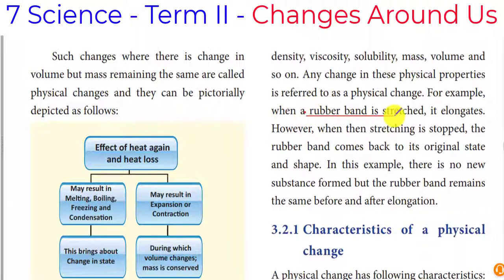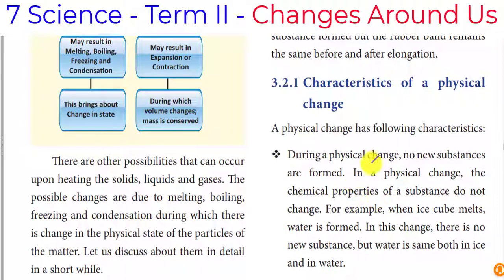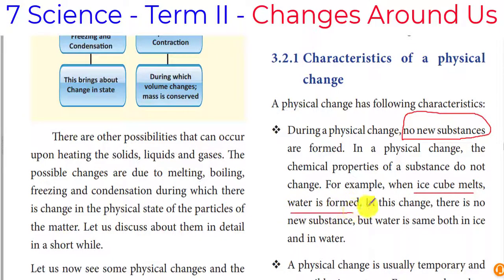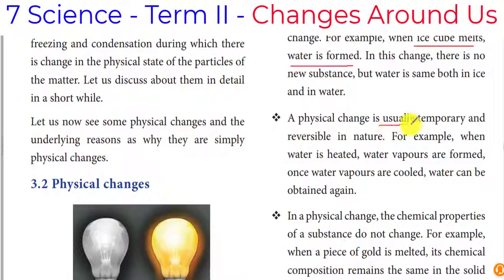A rubber band is stretched and its elongation increases. When it is reversed back, it returns to its original form — that is not a chemical change. Physical change characteristics: no new substance is formed. This is the first character. It is usually temporary and can be reversible.